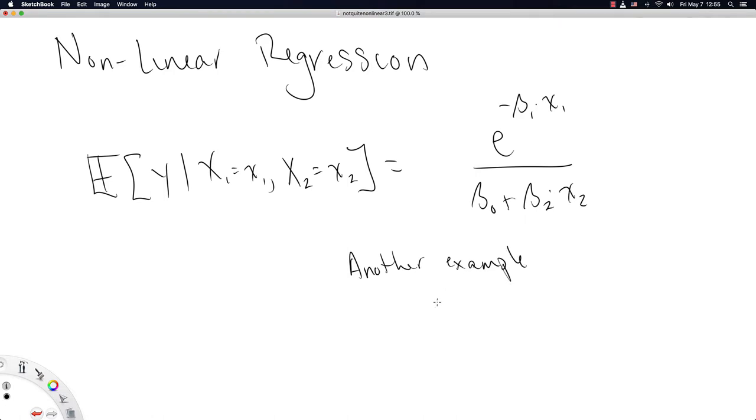Another example might look like beta 0 plus beta 1 times sin of beta 2 times x1 plus beta 3 times x3. I'm getting a little lost in my indices here. But hopefully, you can see that by putting this beta term inside sin has made the rest of these seemingly pluses into a nonlinear regression example, much like the betas here show up nonlinearly.